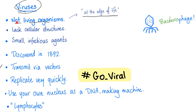Why consider it a non-living thing? Because it lacks a cellular structure. Why is it similar to living things? Because it can replicate — very quickly indeed, that's why we call it 'going viral.' We first discovered these pathogens around 1892 or so, less than 150 years ago, which historically speaking is nothing.